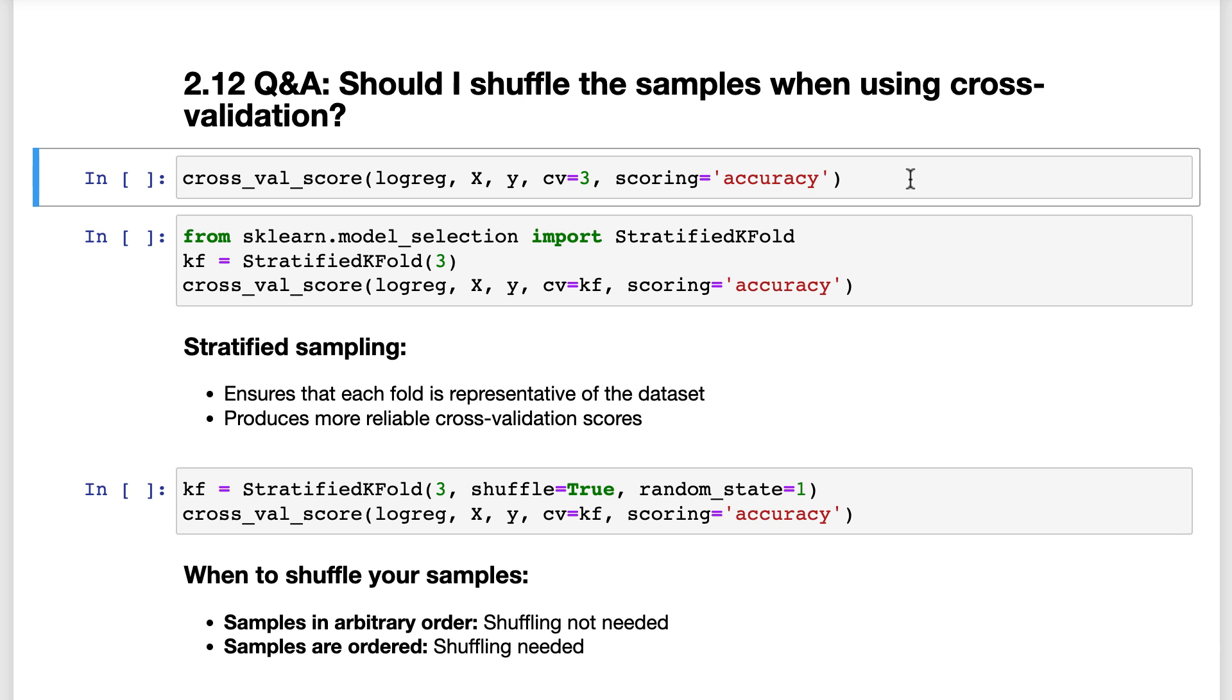When I ran cross-val score earlier in this chapter, I passed an integer, 3 in this case, that specified the number of cross-validation folds.